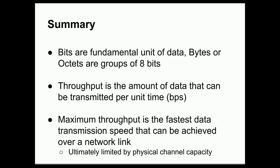So to summarize, the fundamental unit of data that we use is the bit. Bytes and octets are groups of eight bits. In modern usage, those two units are equivalent to each other. Throughput is the amount of data that we can transmit per unit time. And fundamentally, we normally use bits per second as our unit for expressing this quantity. The maximum throughput of a system is the fastest data transmission speed that can be achieved over a network link. This maximum throughput can be measured at any layer of the OSI model, but it is ultimately subject to hard physical limitations that are introduced by the physical channel capacity in the physical layer.